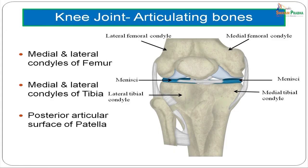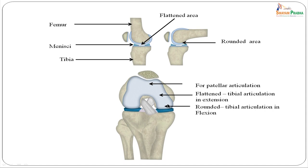The knee joint has articulating bones formed by the lower ends of the femur and upper ends of the tibia. You see the lateral femoral condyle articulating with the lateral tibial condyle, the medial femoral condyle articulating with the medial tibial condyle, and the patella articulating with the lower end of the femur. The articular surface of the lower femur shows an anterior flattened area for patella articulation, a central flattened area for tibial articulation in extension, and a posterior rounded area for tibial articulation in flexion.